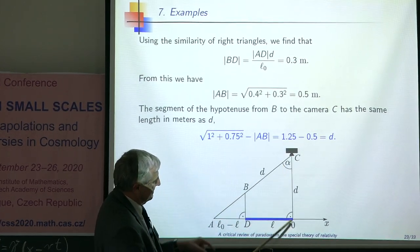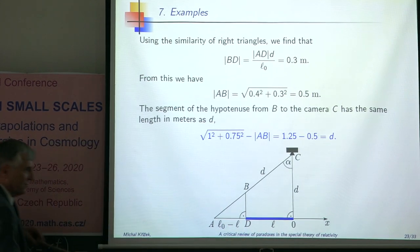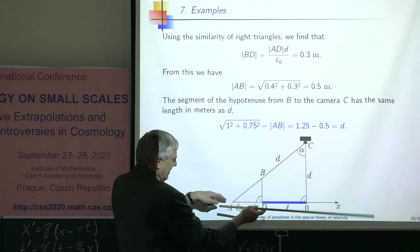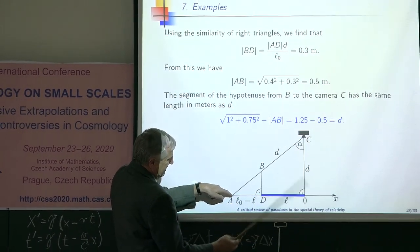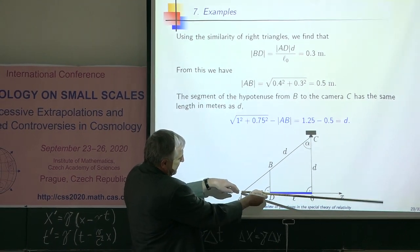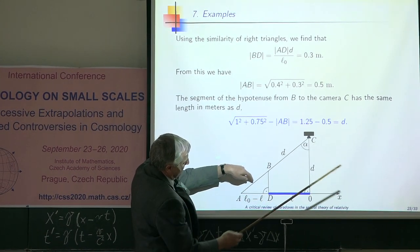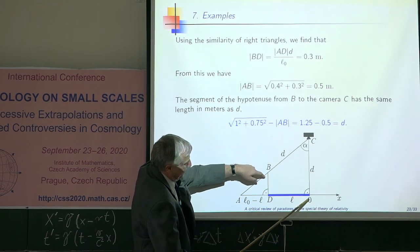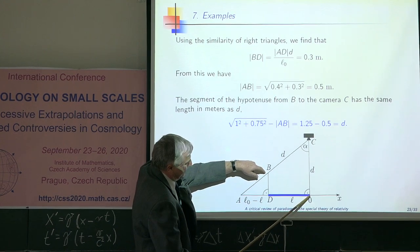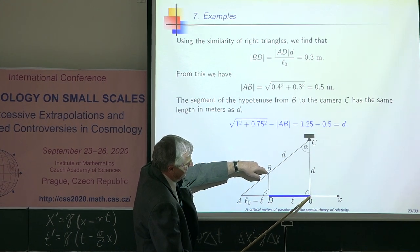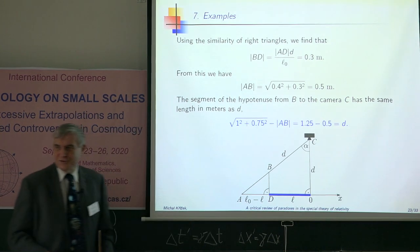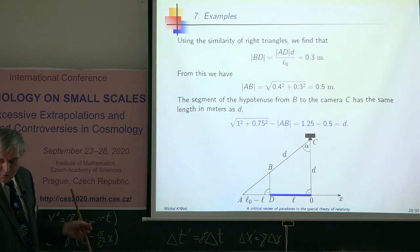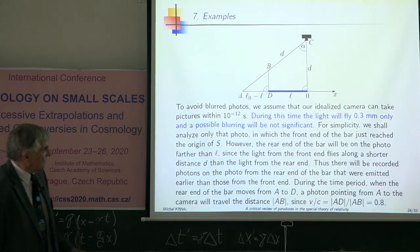This distance is the same as the distance. If the bar moves, then the photon which leaves the rear end of this bar will come to point B. During that time, the front end of this bar will reach the origin. And this is the same distance. In this way, you can find that you will see no contraction.